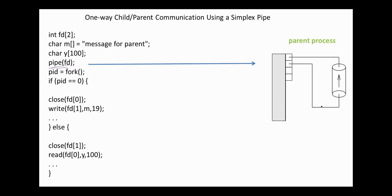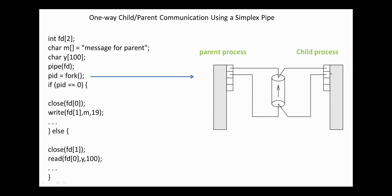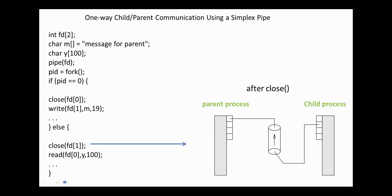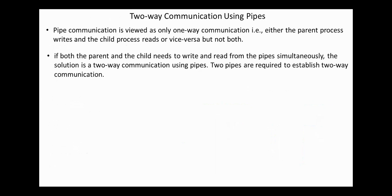After pipe(fd), the pipe is created in the parent process. fork() is used to create a child process. If PID is zero, we are executing the child process — we close fd[0] and write a message into the pipe. Else we close fd[1] and read the message from the pipe. After closing fd[0] in the child process and fd[1] in the parent process, the pipe looks like a simplex one-way child-to-parent pipe.